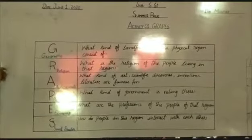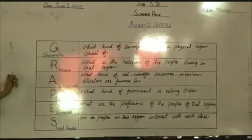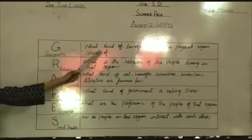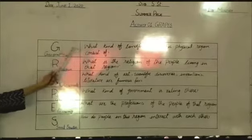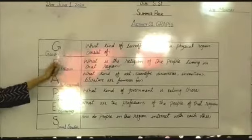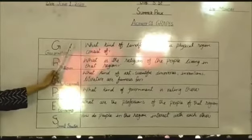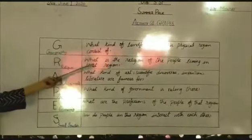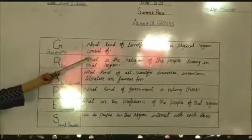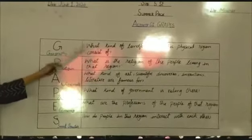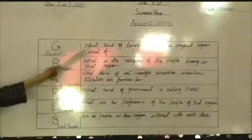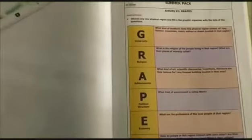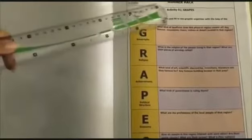Now, for this activity, you want to choose a region — a land, a pond, a mountain, a desert, a valley — it's up to you. You have to answer all the GRAPES questions for that region. For the summer map activity one, grapes, you have been given space to write your answers.